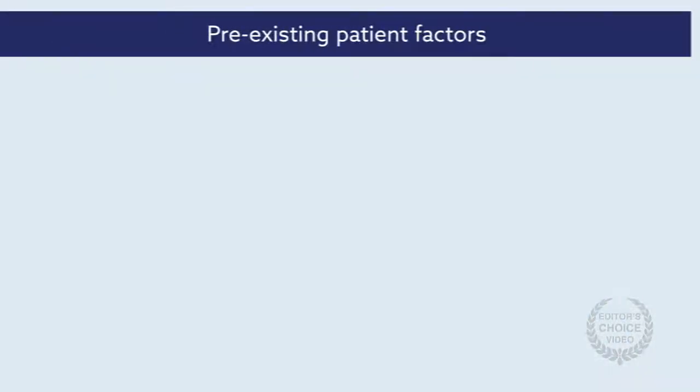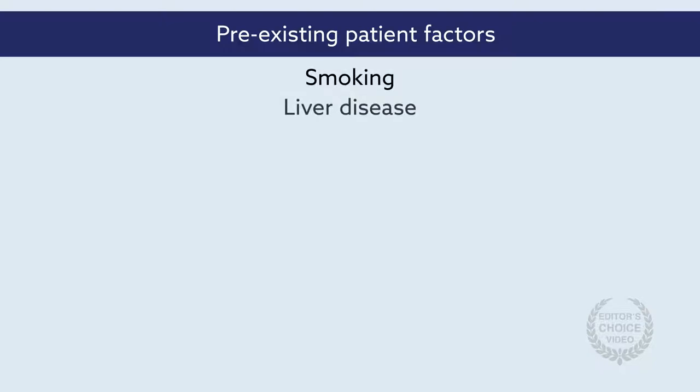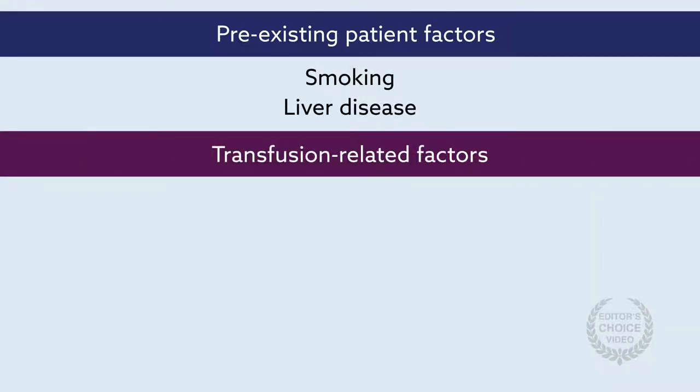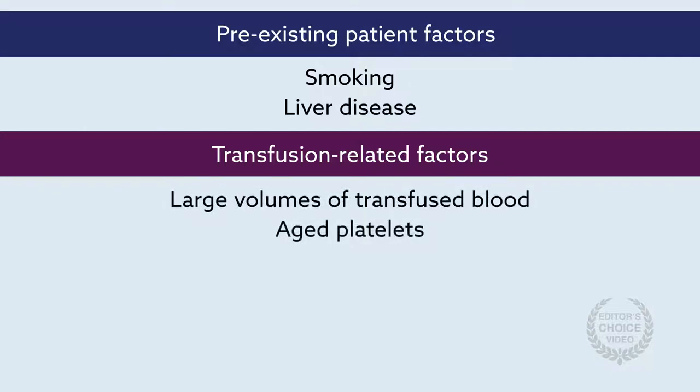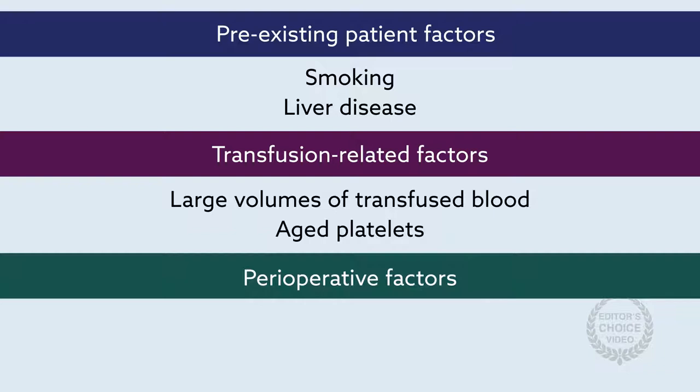Nevertheless, there are risk factors, including pre-existing patient factors associated with inflammation, such as smoking or liver disease, transfusion-related factors, like receiving large volumes of transfused blood or aged platelets, and perioperative factors, such as cardiopulmonary bypass or other high-risk surgeries with frail patients.